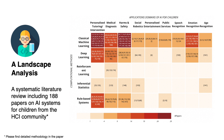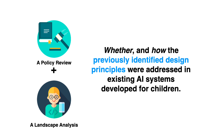To see how these principles relate to existing AI systems for children, we conducted a landscape analysis through a systematic literature review, including 188 papers on AI systems developed for children from the HCI community, constructing a high-level overview of key systems and their characteristics, including their target audience, kinds of data processed, as well as application domains and computational methods used. We further cross-compared our policy review and landscape analysis, with the aim of identifying whether and how the previously identified design principles were addressed in existing AI systems developed for children.